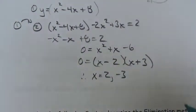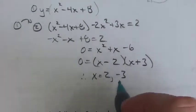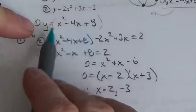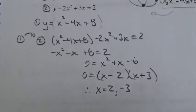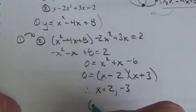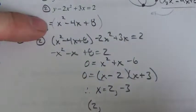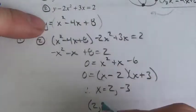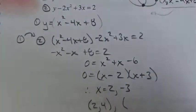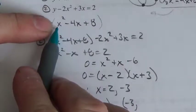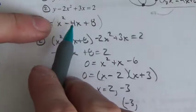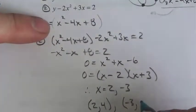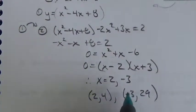Now let's find the y-coordinates. I'll plug the two x-coordinates into the equation I already have with y isolated. Plugging in x equals 2: 2 squared minus 4 times 2 plus 8 — that's 4 minus 8 plus 8, which gives 4. So the point is (2, 4). Plugging in x equals negative 3: 9 plus 12 plus 8 equals 29. So the second point is (-3, 29).